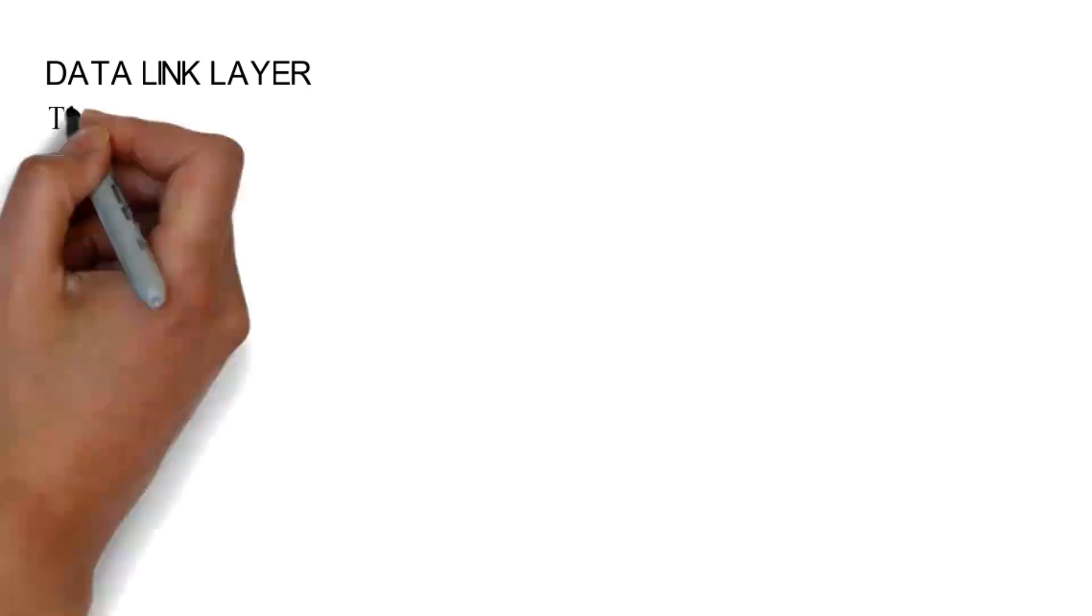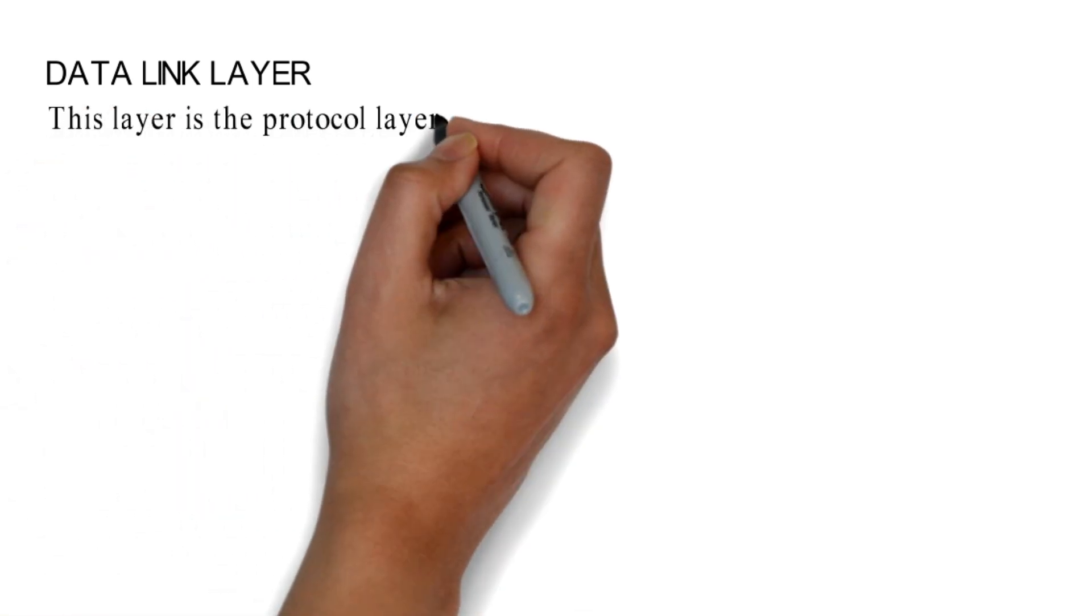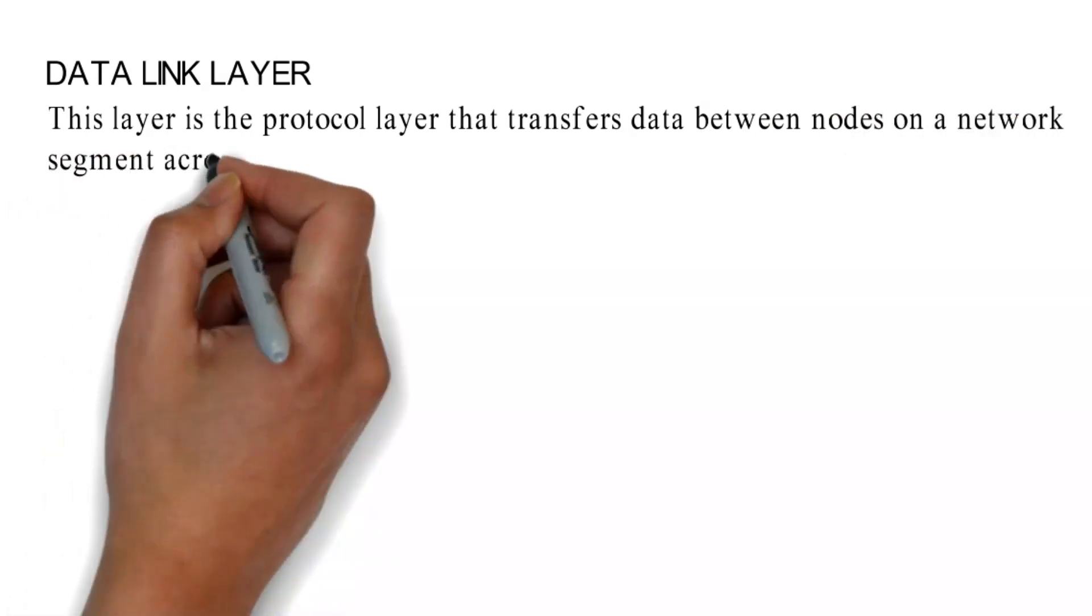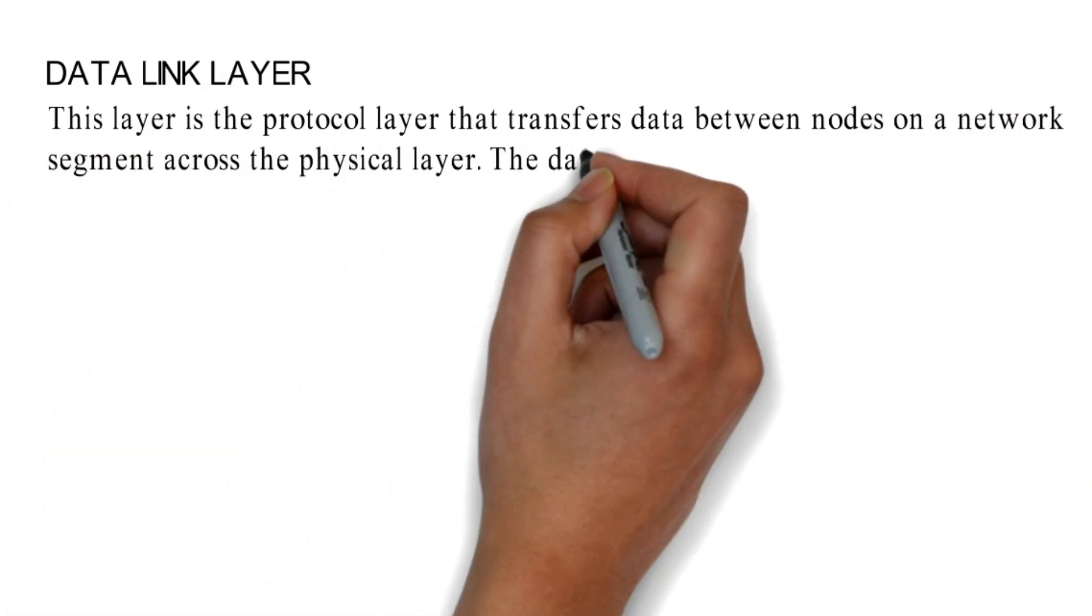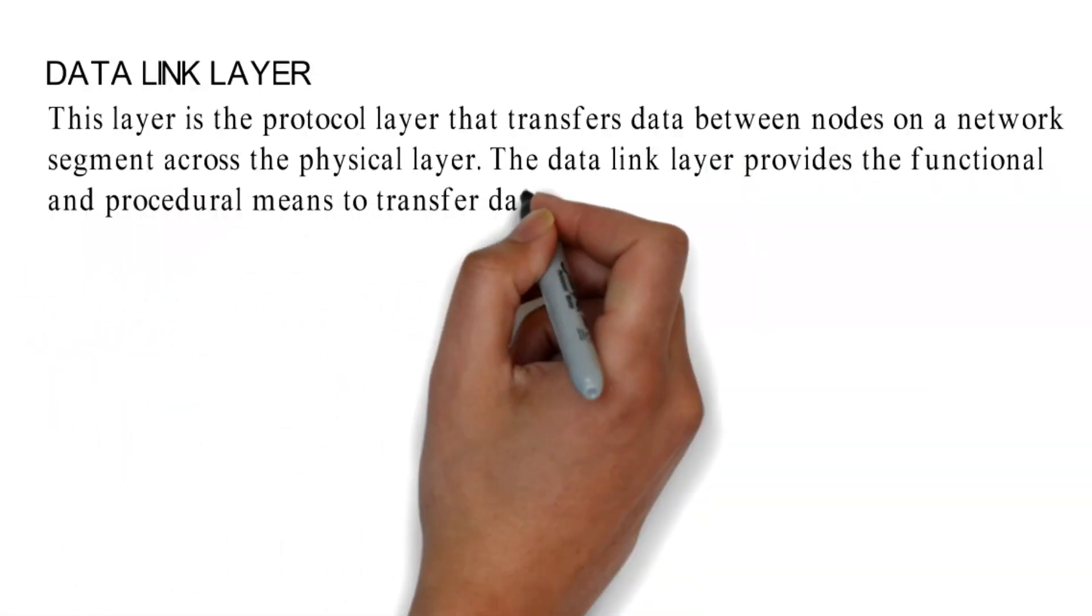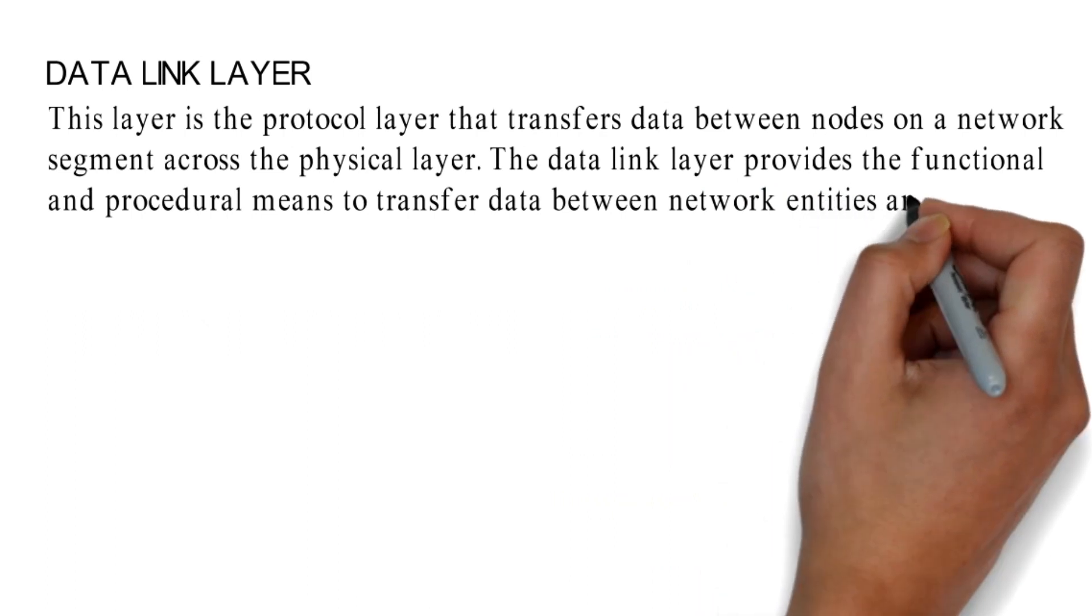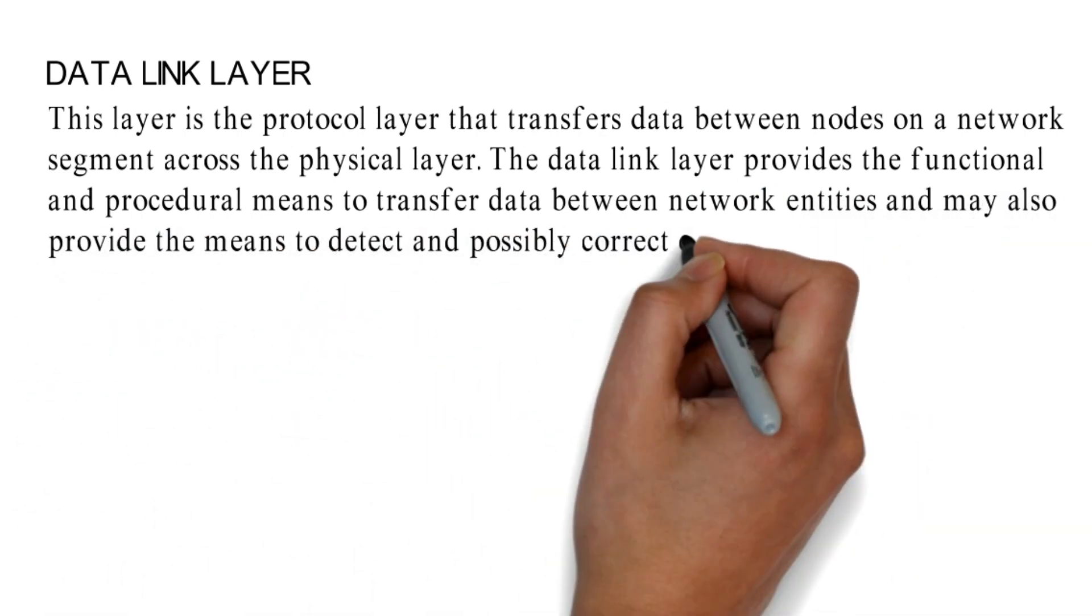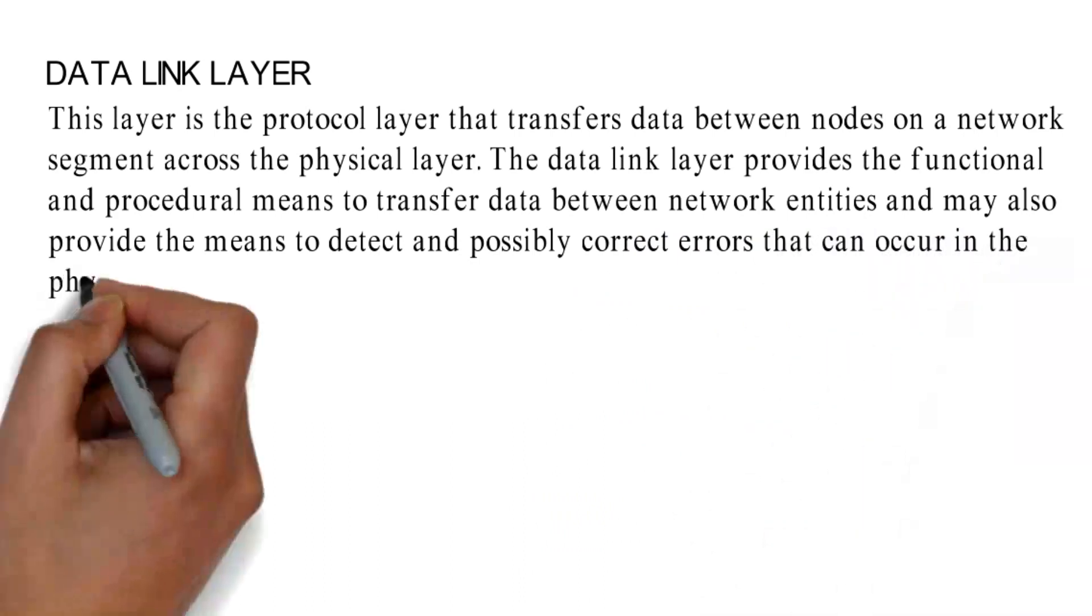Data Link Layer. This layer is the protocol layer that transfers data between nodes on a network segment across the physical layer. The Data Link Layer provides the functional and procedural means to transfer data between network entities and may also provide the means to detect and possibly correct errors that can occur in the physical layer.